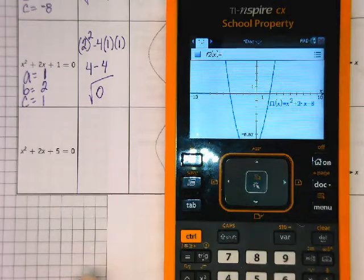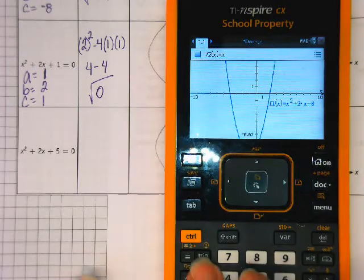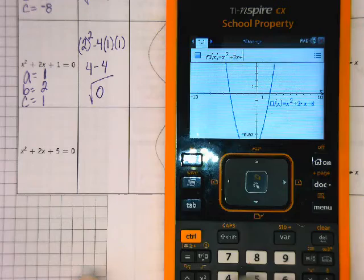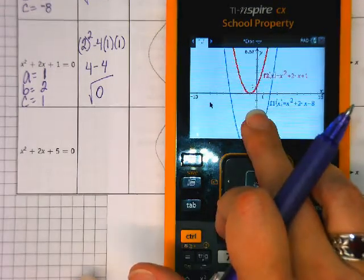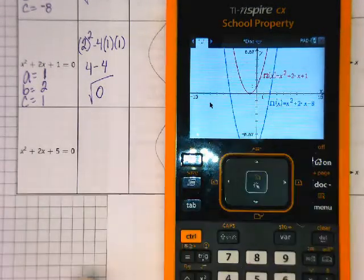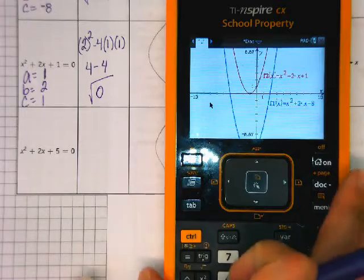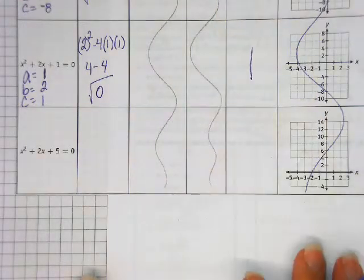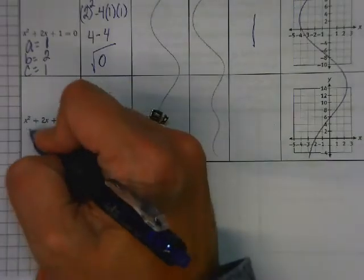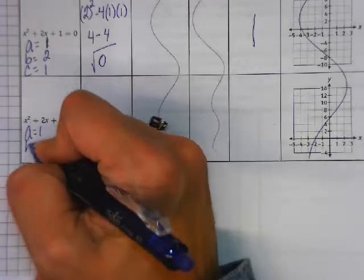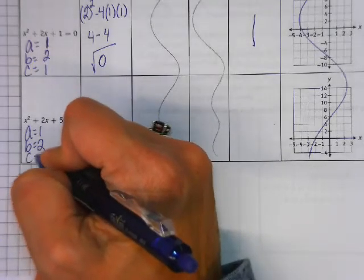So if we plug this in, plus 2x plus 1, you can see here it's only touching one time, one solution. What's going to happen on this one? 1, 2, and 5.